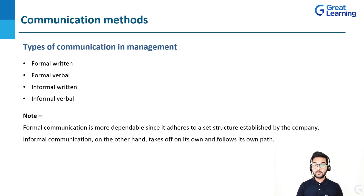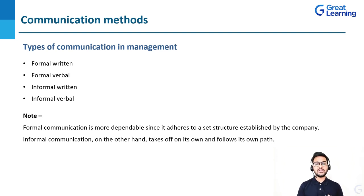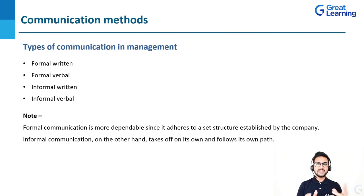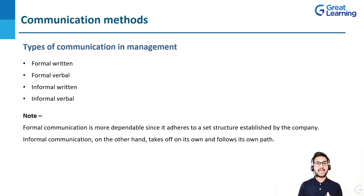A simple note: formal communication is more dependable since it adheres to a set structure established by the company. Informal communication, on the other hand, takes off on its own and follows its own path. If you're talking at an organizational level, there will always be a structure — each and every organization will have certain values and structure for how they want to communicate, how you're supposed to talk to your colleagues, managers, and leadership team, what kind of emails you're supposed to send. There are generally training and development programs in organizations to help manage this communication properly.